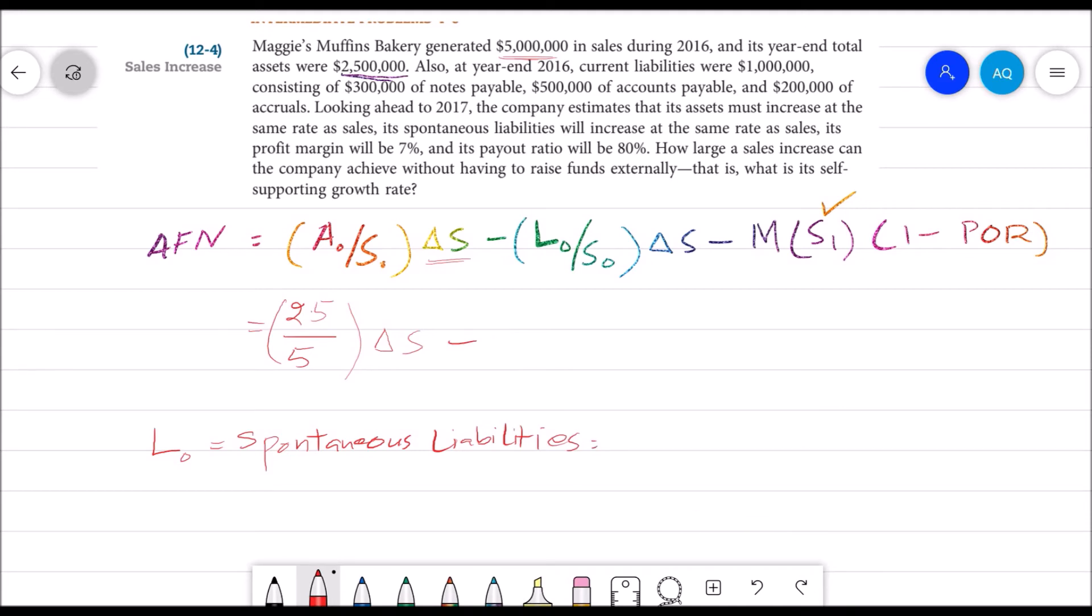These liabilities change automatically without our any decisions. For example, in current liabilities, notes payable—they don't increase automatically. We have to issue some note, go to the bank, issue notes. These are not spontaneous; we have to take decisions for these. While our accounts payable and accruals are spontaneous.